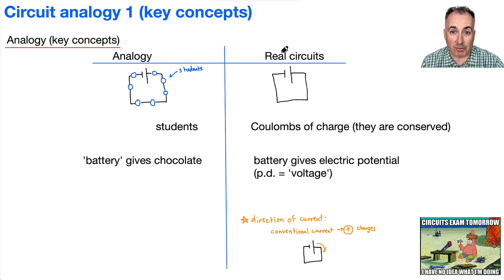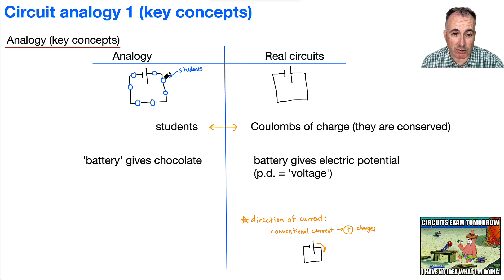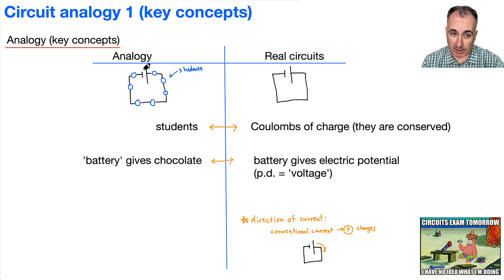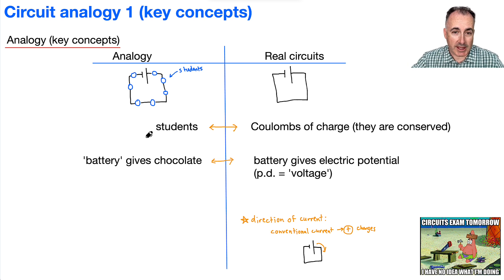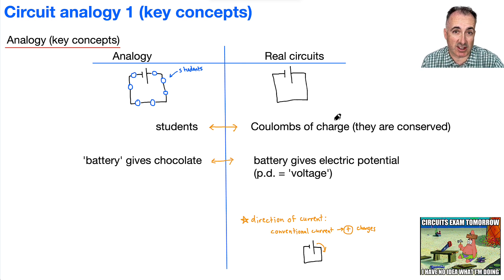In this world of analogy, we're going to have real circuits on the right. We're going to have students, and the students in the analogy represent a coulomb of charge. I would line up all the students in my class in a square circuit. In the middle is the battery — that's another student I'd call the battery. They just sit there with a box of chocolates and give out chocolates. In the real circuit, the students are coulombs of charge. I like this because it tells you that charges are conserved — they don't disappear, they just move or they don't move.